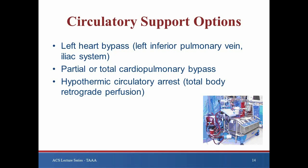With regard to extracorporeal bypass or circulatory support for TAAA repair, a variety of strategies are employed. Most groups advocate left heart bypass at a minimum, and it is generally accepted that decompression of the proximal circulation in conjunction with distal perfusion to the abdominal viscera, spinal cord, and lower extremities ameliorates complications associated with ischemia, such as generalized metabolic acidemia, acute tubular necrosis or overt renal failure, and paraplegia. This is undertaken by cannulation of the inferior pulmonary vein and any site distal to the aortic clamp site, from the descending thoracic aorta to the common femoral artery. Our preferred method of left heart bypass includes left atrial drainage via the left inferior pulmonary vein and arterial inflow by cannulation of the iliac system after exposure of the bifurcation. This provides adequate retrograde flow to the visceral segment and the spinal cord via the internal iliac system and antegrade flow to the bilateral lower extremities.